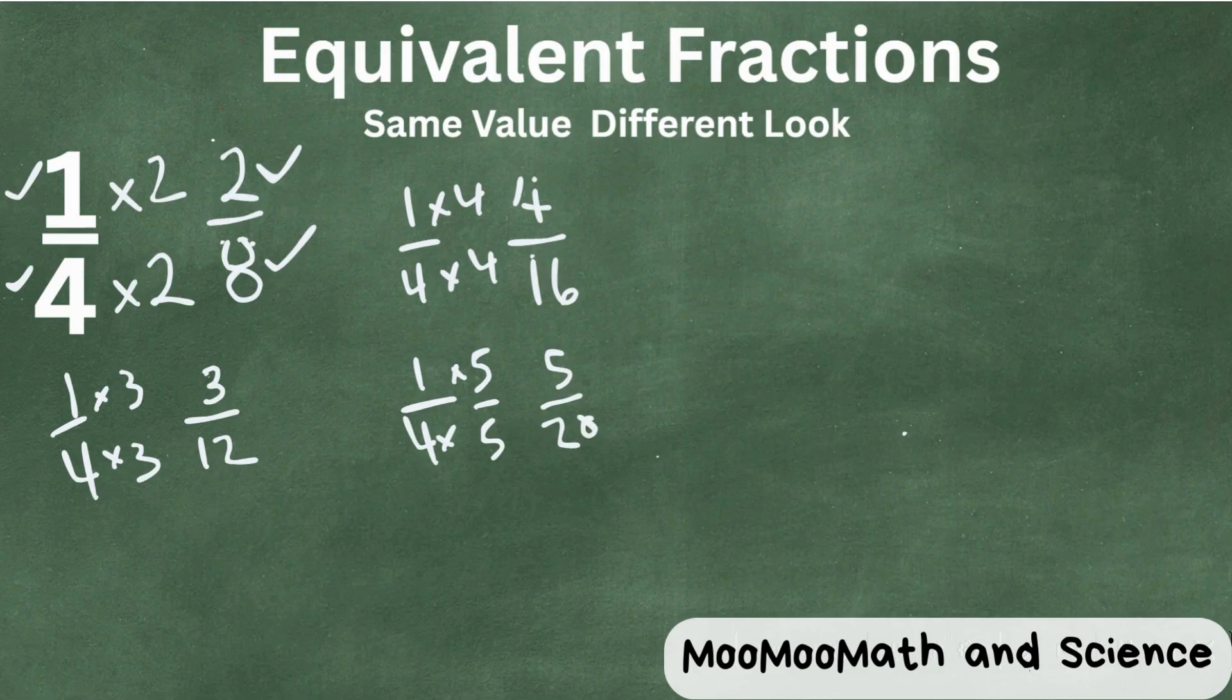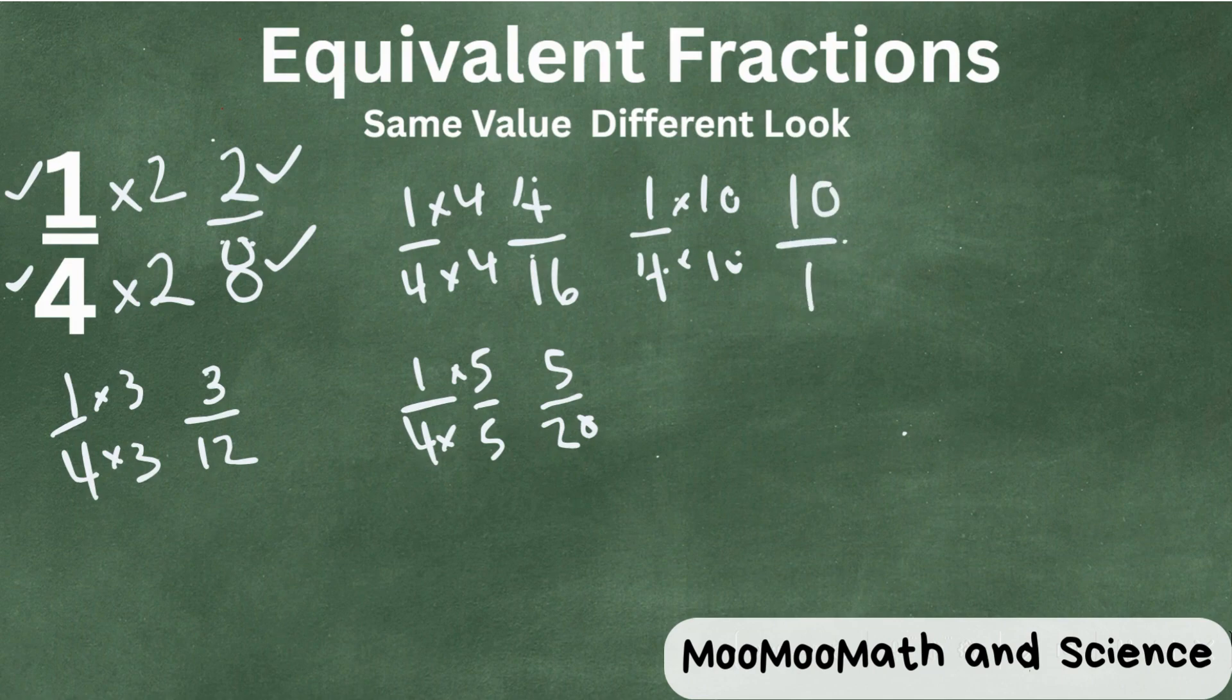Again, remember, five will go into twenty four times. Let's create two more. How about this? One-fourth times ten, and that gives us ten over forty.